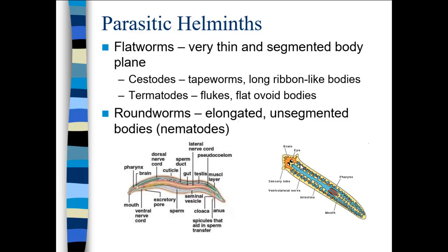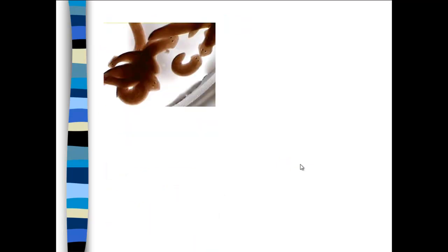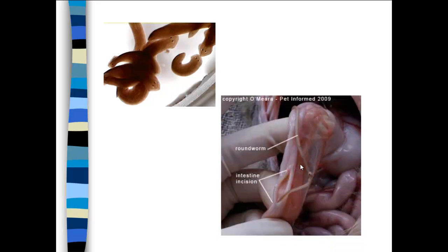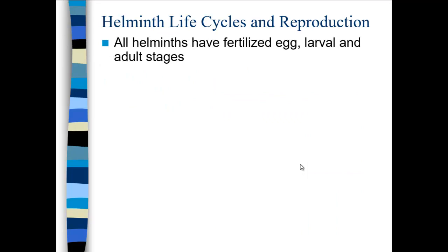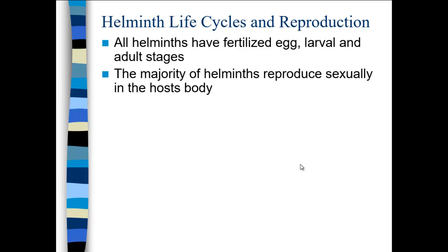Here's a fluke. The fluke's mouth and anus are actually the same — it eats through its mouth, digests food, and excretes waste also through its mouth in separate cycles. Here are some flukes — you can see their little eyes; they can bend and wriggle. Here's a roundworm taken from a dog intestine. Helminths hatch from eggs that dwell outside the helminth body. They have egg, larval, and adult stages, and the majority reproduce sexually in the host body.